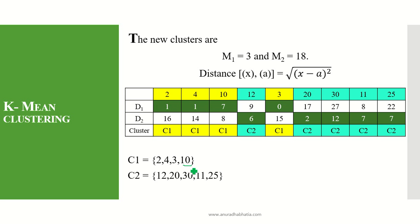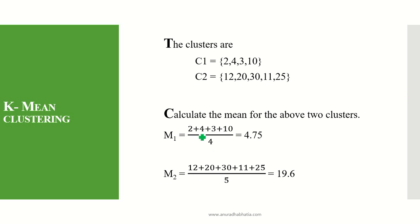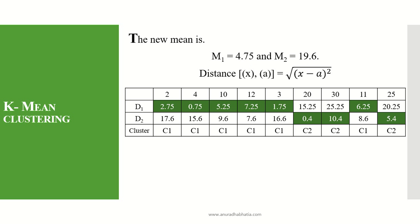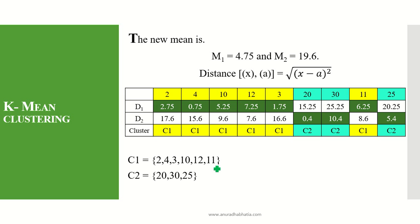We start recalculating the mean again with the new cluster values: C1 now contains 2, 4, 3, and 10, and C2 contains 12, 20, 30, 11, and 25. The new mean for C1 is (2+4+3+10)/4 = 4.75, and for C2 it is (12+20+30+11+25)/5 = 19.6. With these new mean values, we calculate the distance matrix again and find that items 12 and 11, which were in cluster C2, have now moved to cluster C1. Since there is still movement, we cannot stop here.